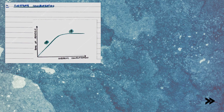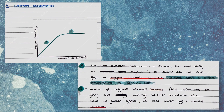Next, we have substrate concentration, which shows the same trend as enzyme concentration. The more substrate there is in a solution, the more likely an enzyme is to collide with one and form an enzyme-substrate complex. Therefore, substrate concentration is directly proportional to the rate of reaction at first. However, the amount of enzymes becomes limiting, and therefore increasing the substrate concentration will have no further effect, so the rate of reaction levels off and remains constant.